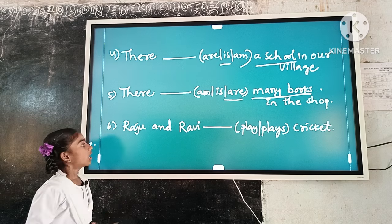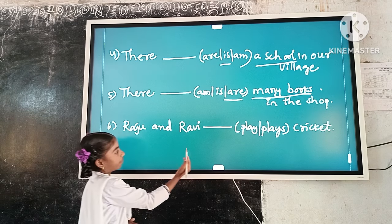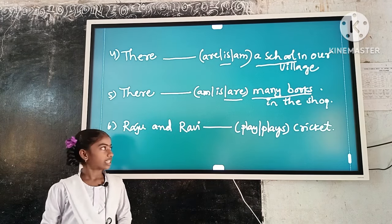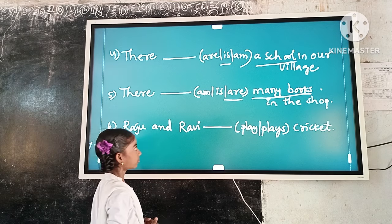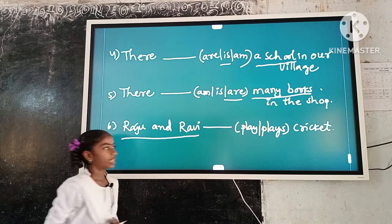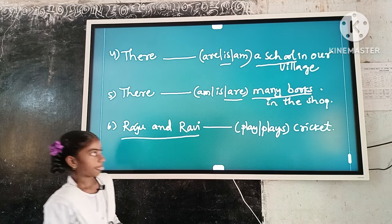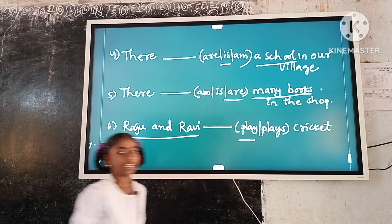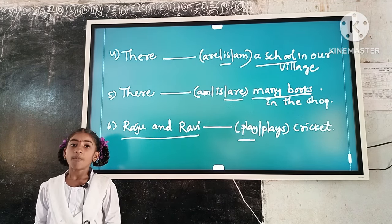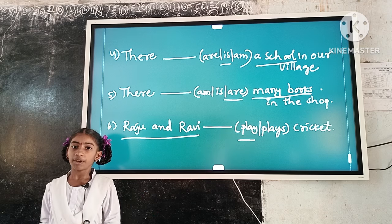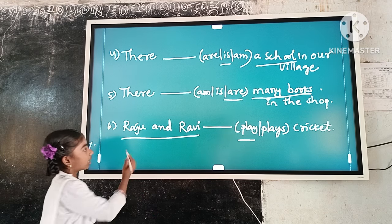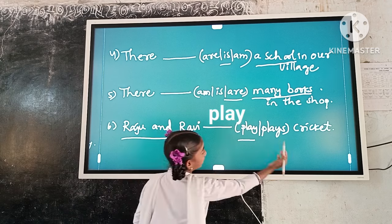Example number 6: Raju and Ravi dash cricket. Here, the subject is plural. 'Play' is a plural verb form. So, plural subject and plural verb form agree. The answer is: Raju and Ravi play cricket.